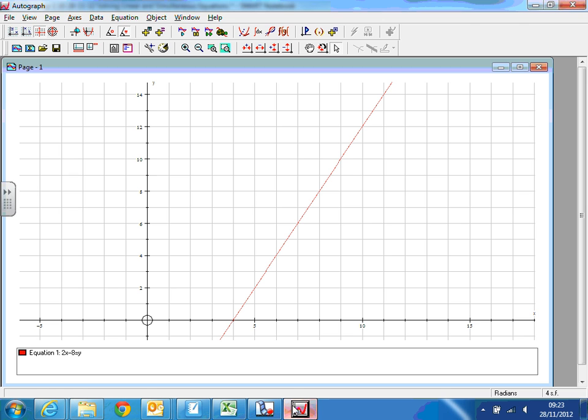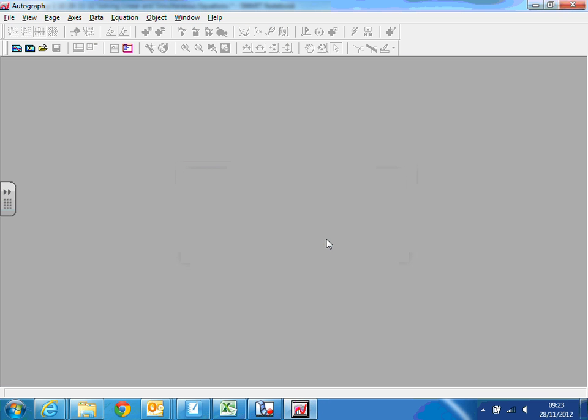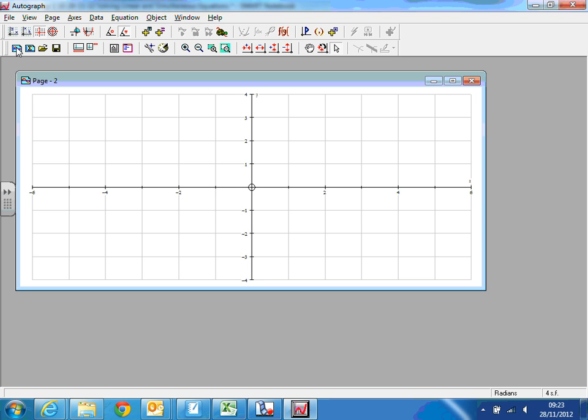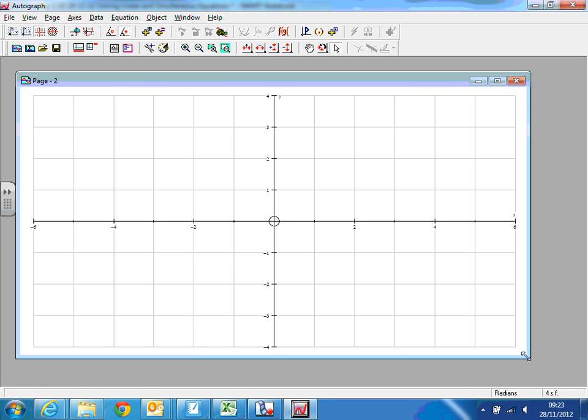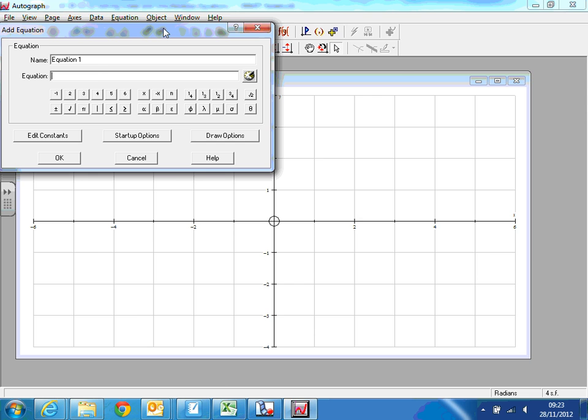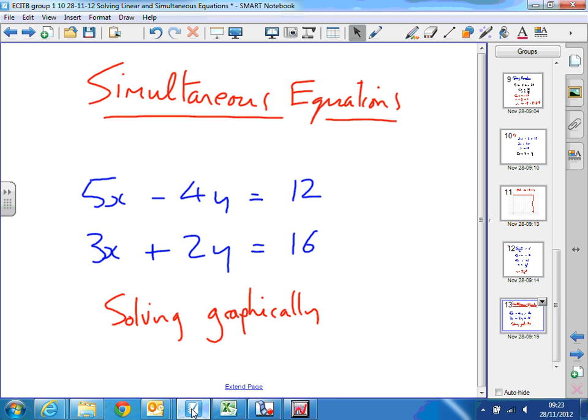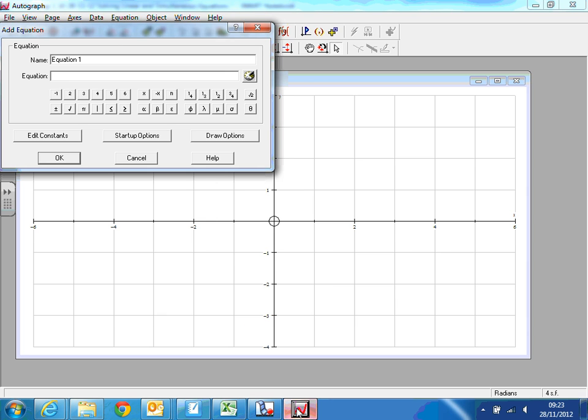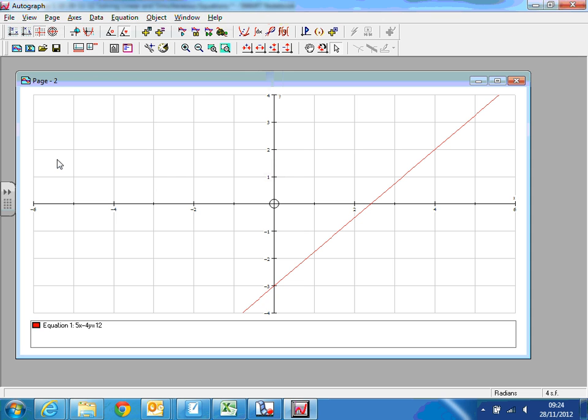Go to Autograph and type in the equations. First equation: 5x minus 4y equals 12. In this example, we'll be asked to do it from a graph or actually work it out. Both. So plot the first graph and you get a straight line as we predicted.